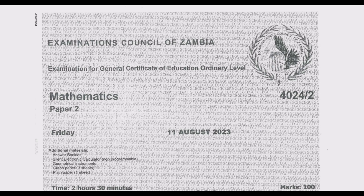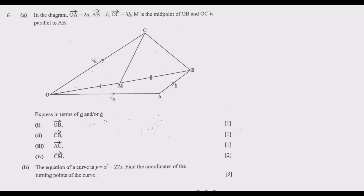Welcome viewers to the sixth episode in a series of 12 episodes focused on the August 2023 Mathematics Paper 2. The first five episodes covered questions 1 through 5. If you haven't seen those, check our YouTube channel playlist containing all 12 episodes. We've also done Paper 1 — check our YouTube channel for the playlist with solutions to all 23 questions.